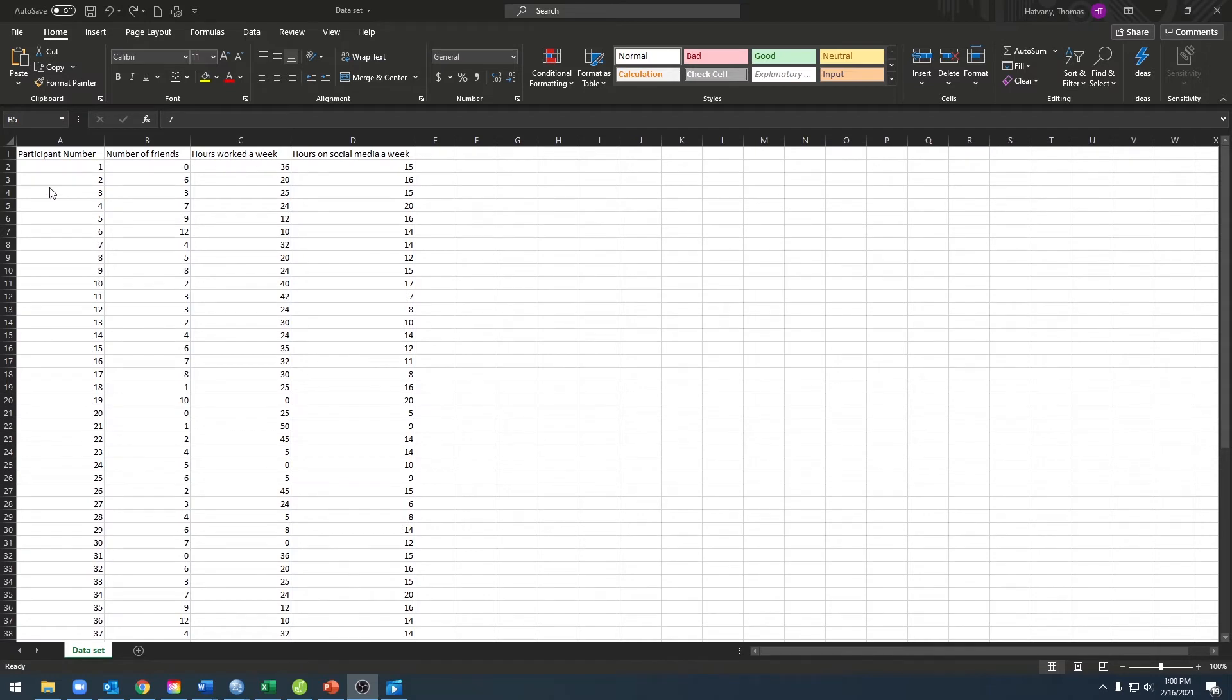I've entered our data such that each row represents a participant. For example, participant number 1, all of participant number 1's data is in that row, and it's not in any other row. Now that we have our data entered, we can go ahead and save it as one of the appropriate file types, and then open it in JASP.